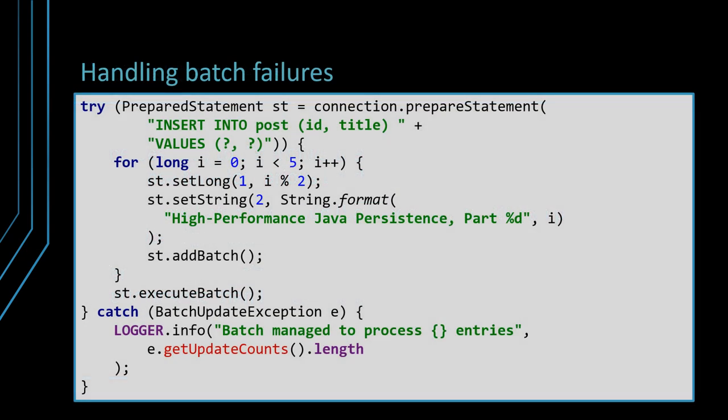Without batching, it's quite straightforward to know which statement has failed, since every JDBC statement is executed in its own database request. When using batching, if you get an SQL exception, the failure can be triggered by any set of bind parameter values. To determine which set of bind parameter values has triggered the failure, you can inspect the updateCounts property of the BatchUpdateException. The updateCounts property tells you how many sets of parameter values have been successfully executed prior to throwing the BatchUpdateException.